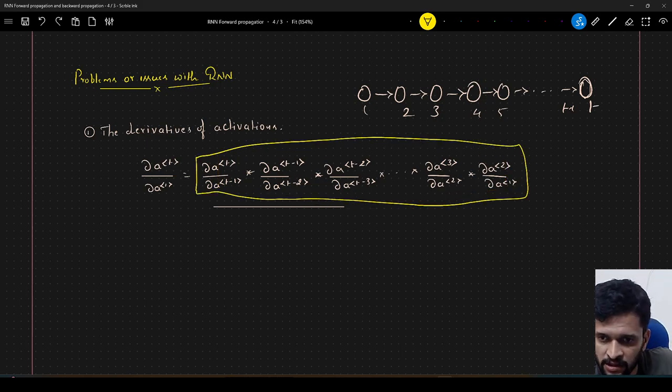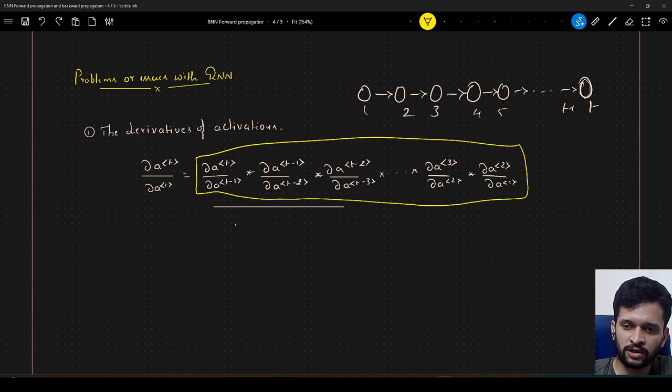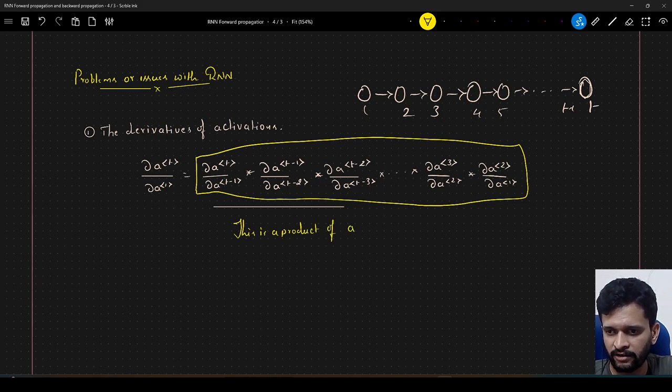So now this equation here, this is a product of, what is this? These are all the products, right. So this is a product of activation multiple times. These are the product of activation derivations, right. So in other terms, I can call it as, there is the product of derivatives of activations. Let me just write that down. This is a product of derivative of, derivative of activations, correct.